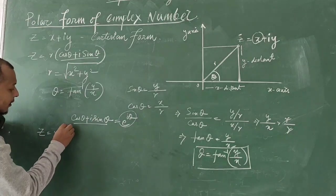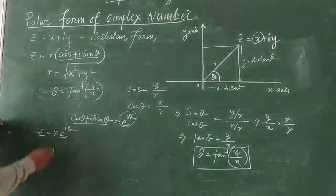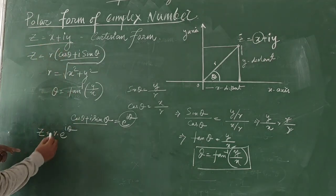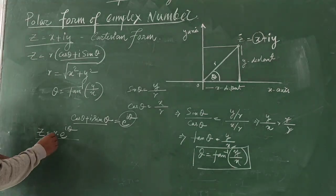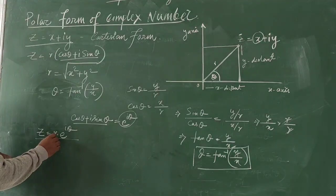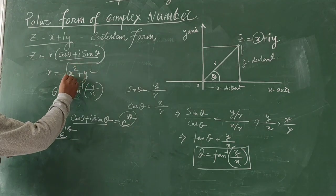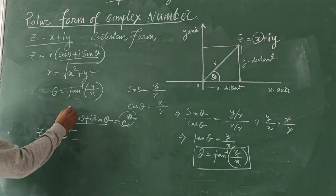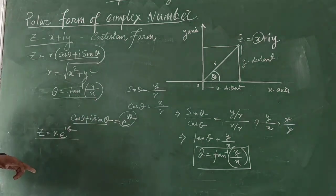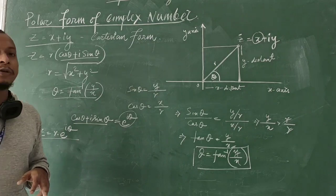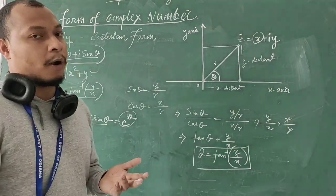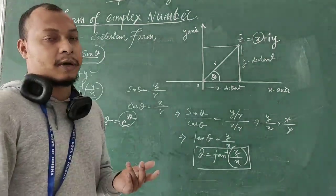So Z = X + iY in Cartesian form becomes Z = R·e^(iθ) in polar form, where R = √(X² + Y²) and θ = tan⁻¹(Y/X). Let's now solve some problems so you can understand this completely.